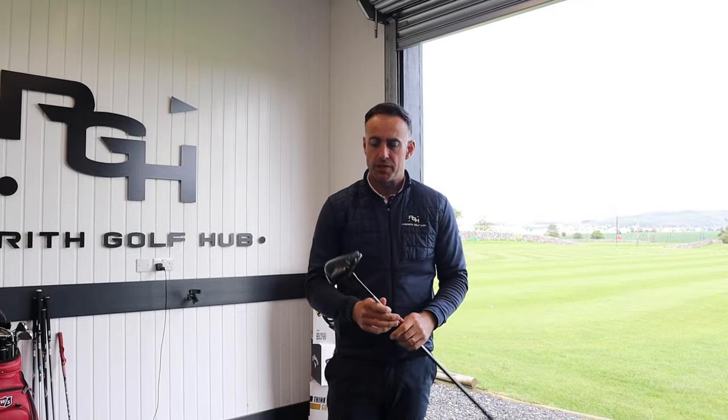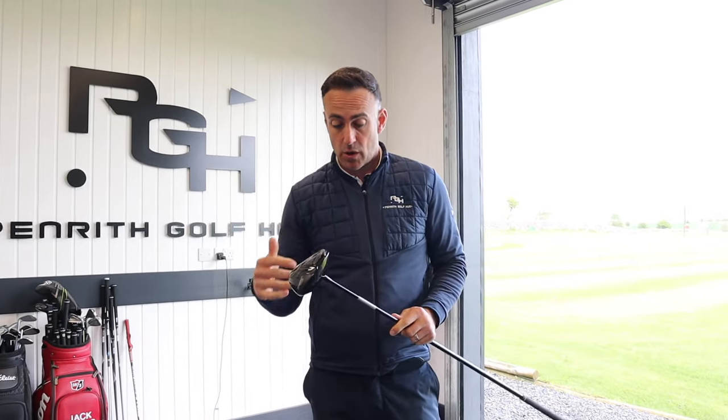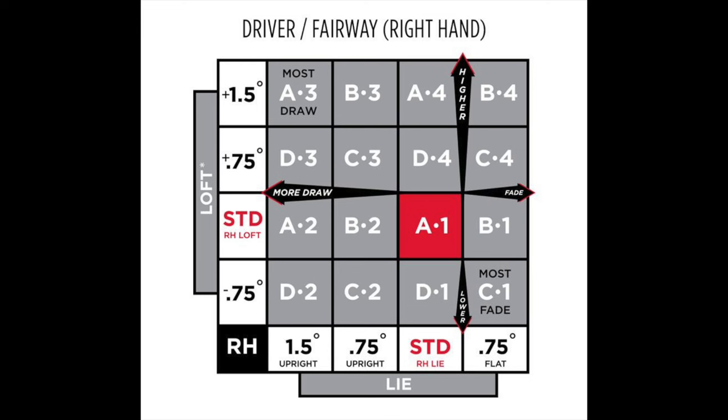Driver settings with the Titleist — as I mentioned, the 16 options can be very confusing for many golfers out there: what setting does what. We've got A, 1, 2, 3, B, C, D — all these numbers flying around. So we're going to talk about what each one does.